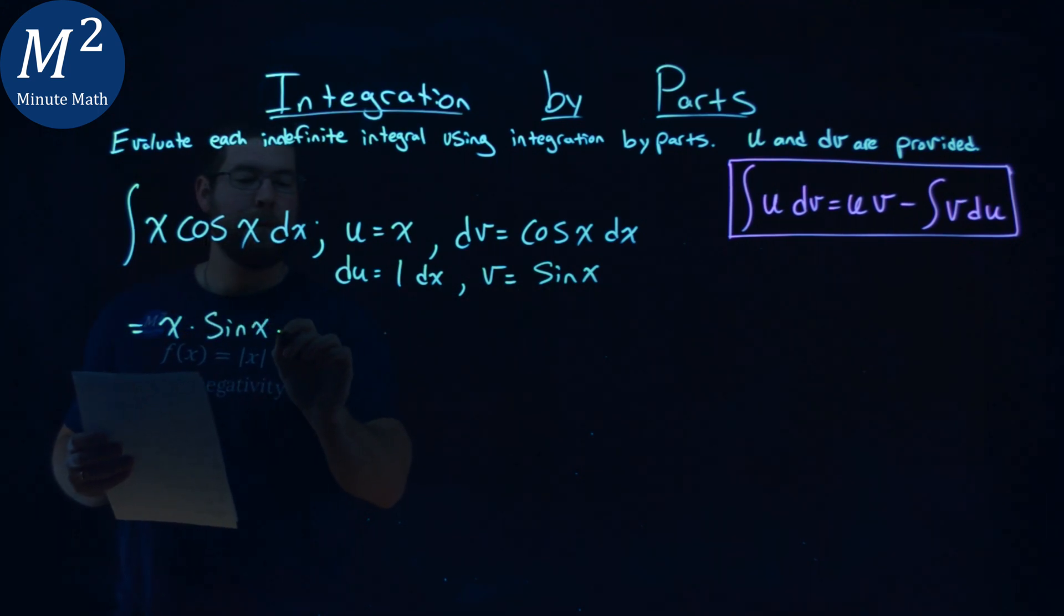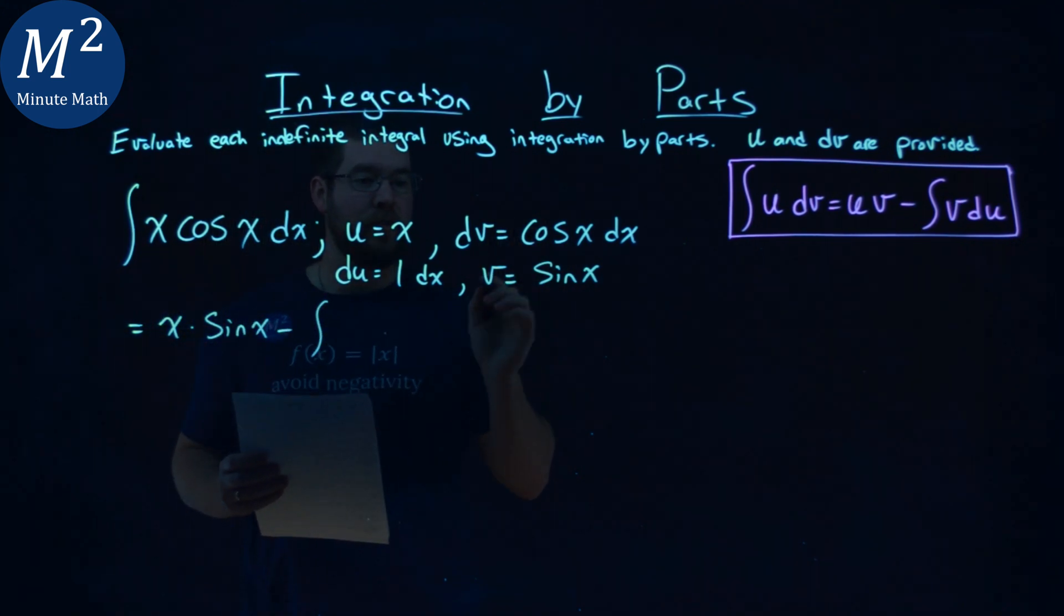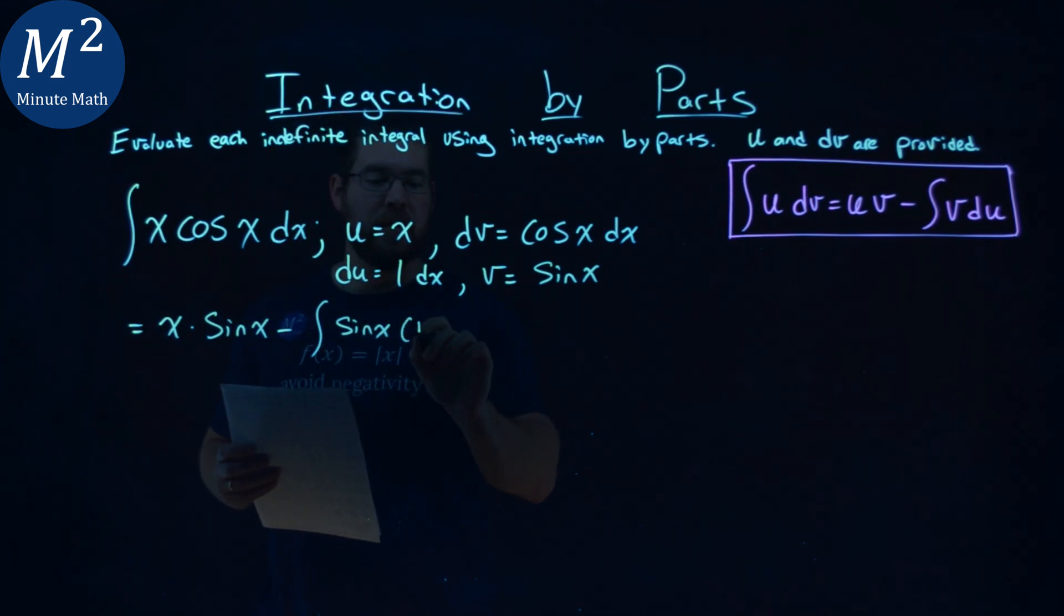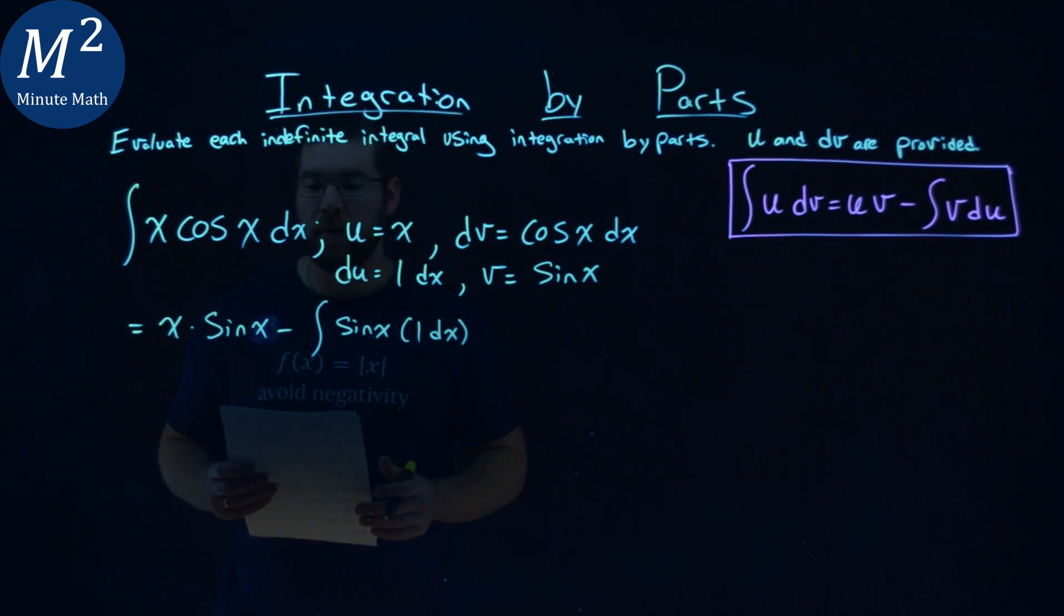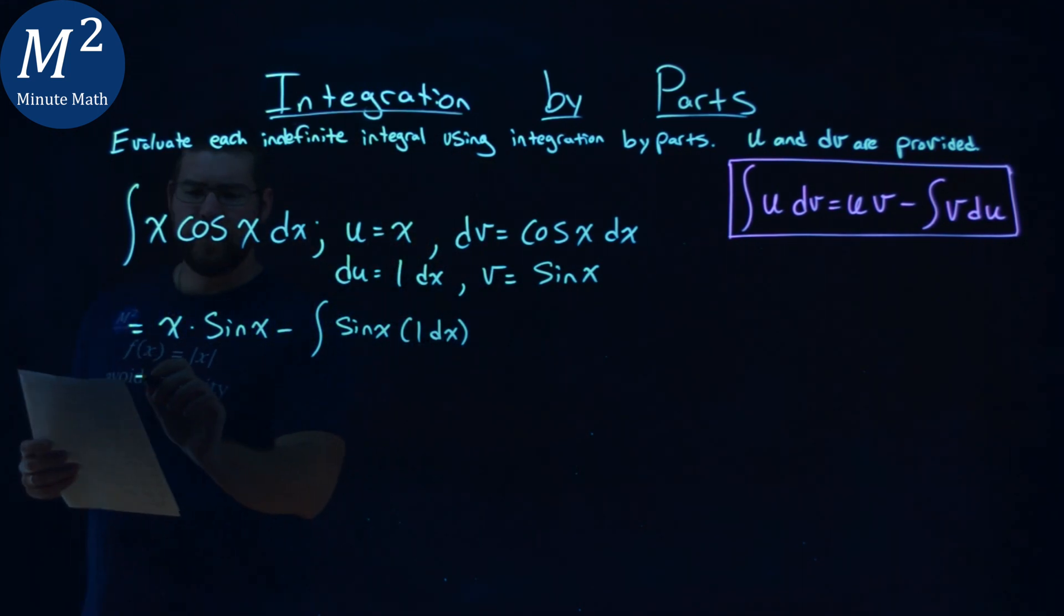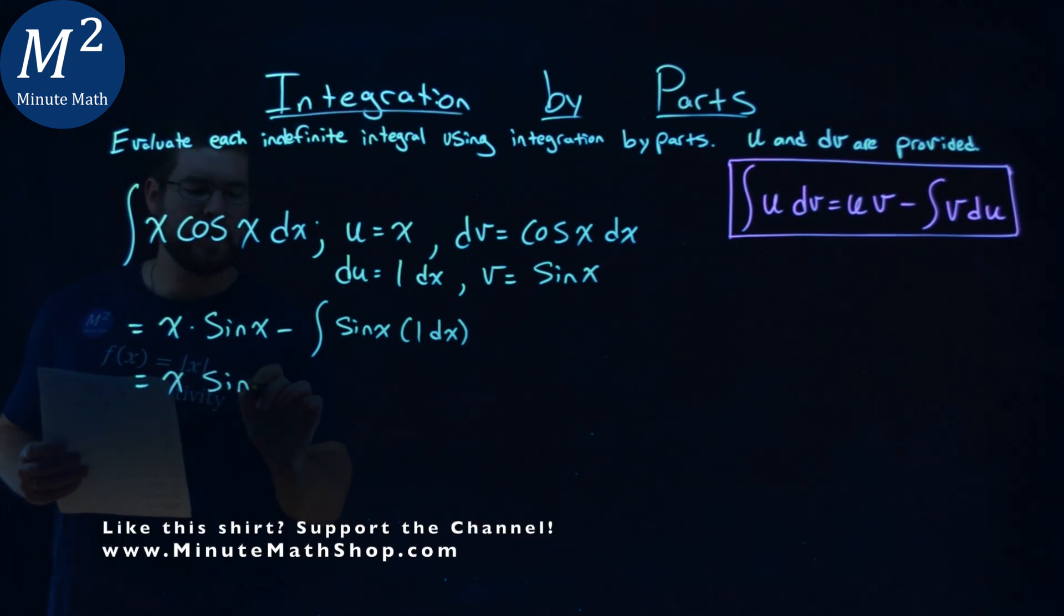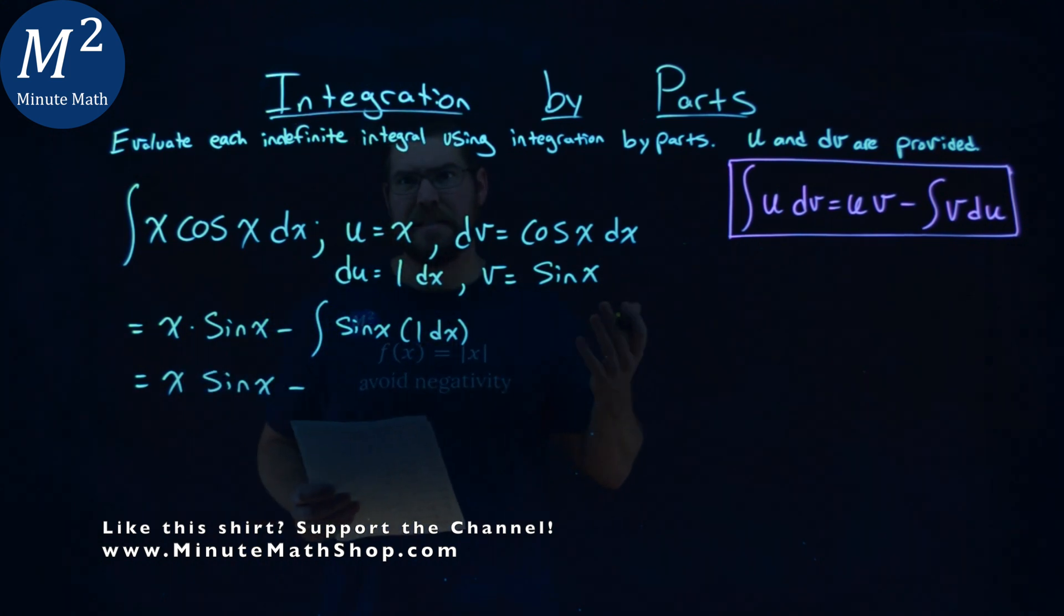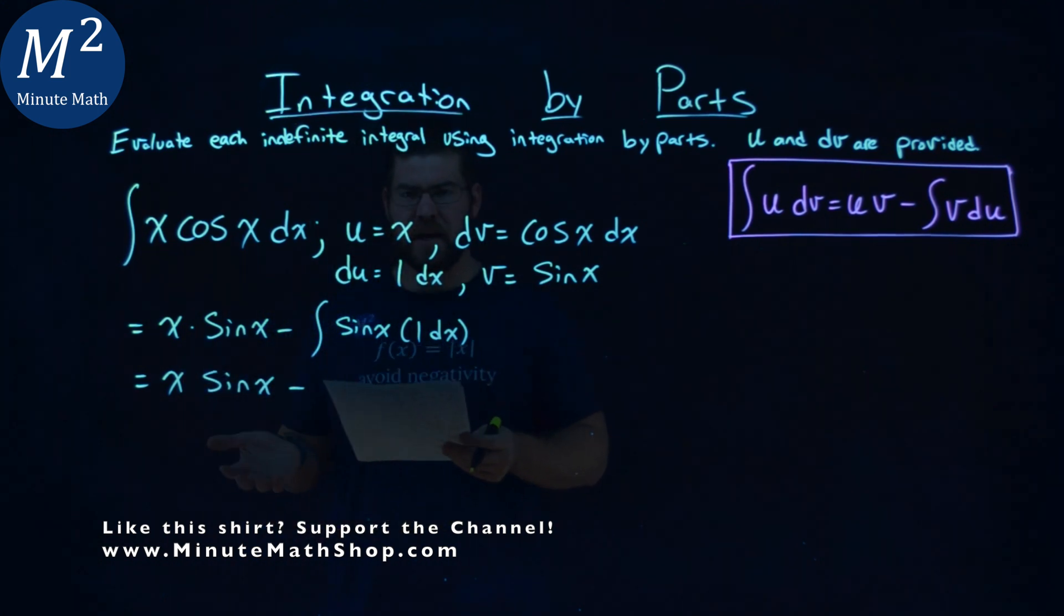minus the integral of v, which is sine of x, and du, which is 1 dx. This actually makes it a little easier now. So we keep going—we have x sine of x here, minus sine of x times 1 dx, or sine of x dx. And what's the integral of sine of x?